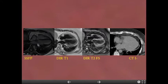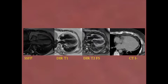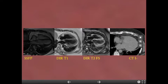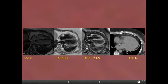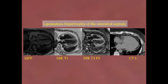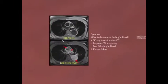Here we have more images: SSFP — with SSFP, CSF is going to be bright due to T2 effects. T1 DIR without fat sat. T2 DIR with fat sat — blood pool is black. Then a CT scan. We're looking at a mass that is bright, saturates with fat on T2, and is dark on CT — fat in the interatrial septum, sparing the fossa ovalis. This is a lipomatous hypertrophy of the interatrial septum.